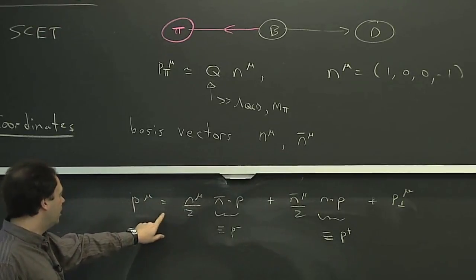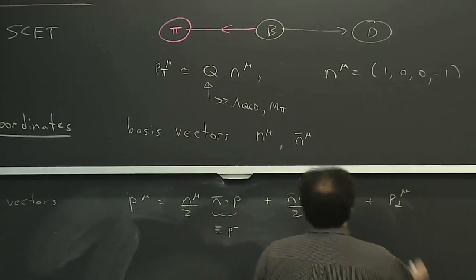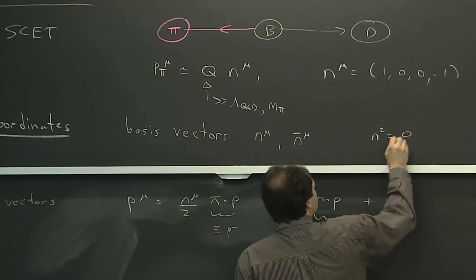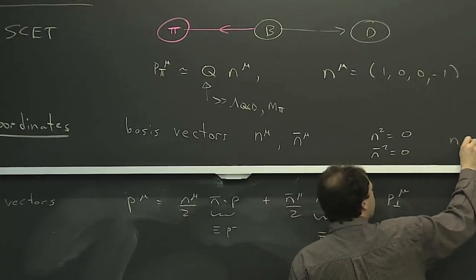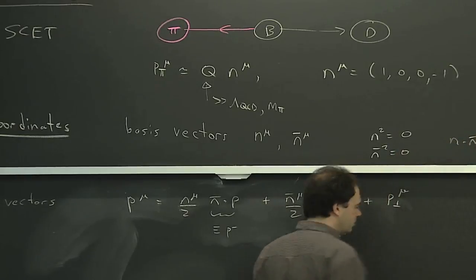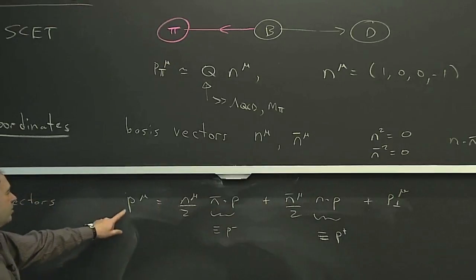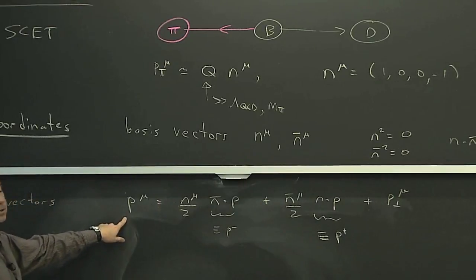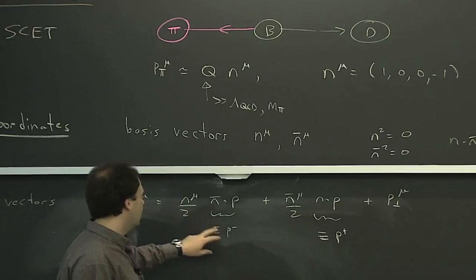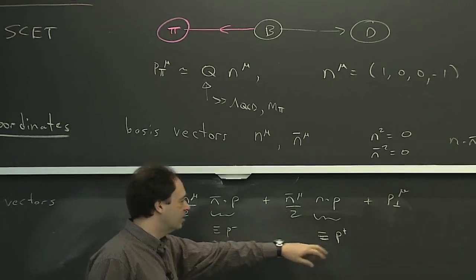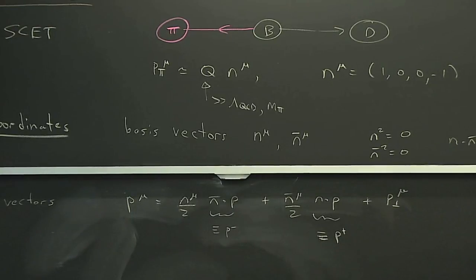With that n and n-bar, which satisfy n squared equals 0, n-bar squared equals 0, and n dot n-bar equals 2 as a normalization convention, we can decompose any momentum p-mu in terms of these — components along n, components along n-bar, and then the remaining two components, which we call the perpendicular components.